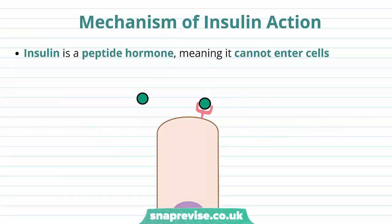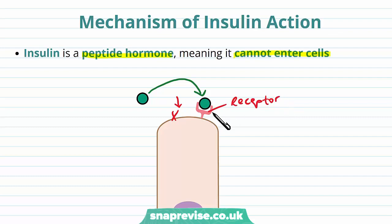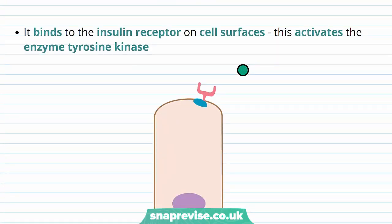So how does insulin actually bring about these effects? It's a peptide hormone released from the endocrine part of the pancreas, and because it's a peptide hormone, it can't enter the cells on its own. The insulin has to bind to receptors in the membrane, as it's unable to pass through, so the effects have to be mediated through the receptor. The first step therefore is binding to the insulin receptor on the cell surface.